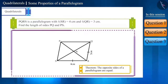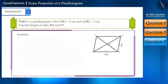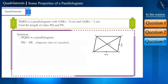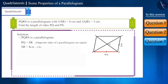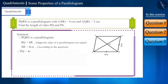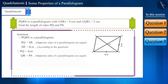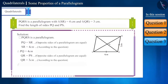We know that the opposite sides of a parallelogram are equal. We are given that quadrilateral PQRS is a parallelogram, so its opposite sides will be equal. That means side PQ is equal to side SR, and the length of SR is given as 4 cm. Therefore, the length of side PQ will also be 4 cm. Similarly, sides QR and PS will also be equal. Since QR is given as 3 cm, the length of side PS will also be 3 cm.